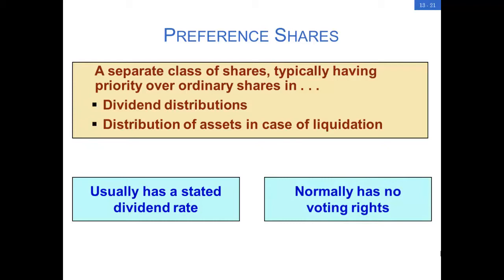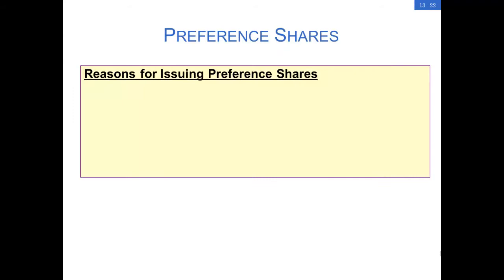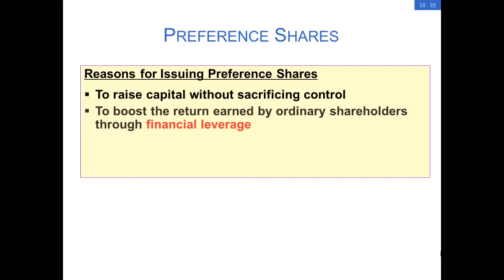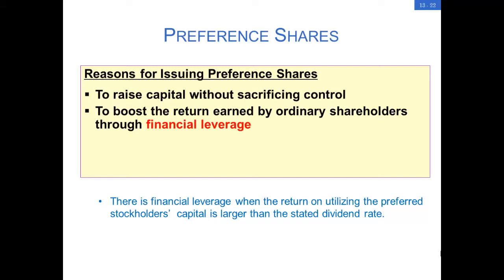There are several reasons why corporations issue preferred stock. Corporations may issue preferred stock to raise the needed capital without sacrificing control, because usually preferred stock does not have voting rights. Issuing preferred stock is also a way to boost return to ordinary shareholders through financial leverage. If the return on utilizing the preferred stockholders' money is higher than the stated dividend in the preference shares, then the extra return will go to the ordinary shareholders' pocket.